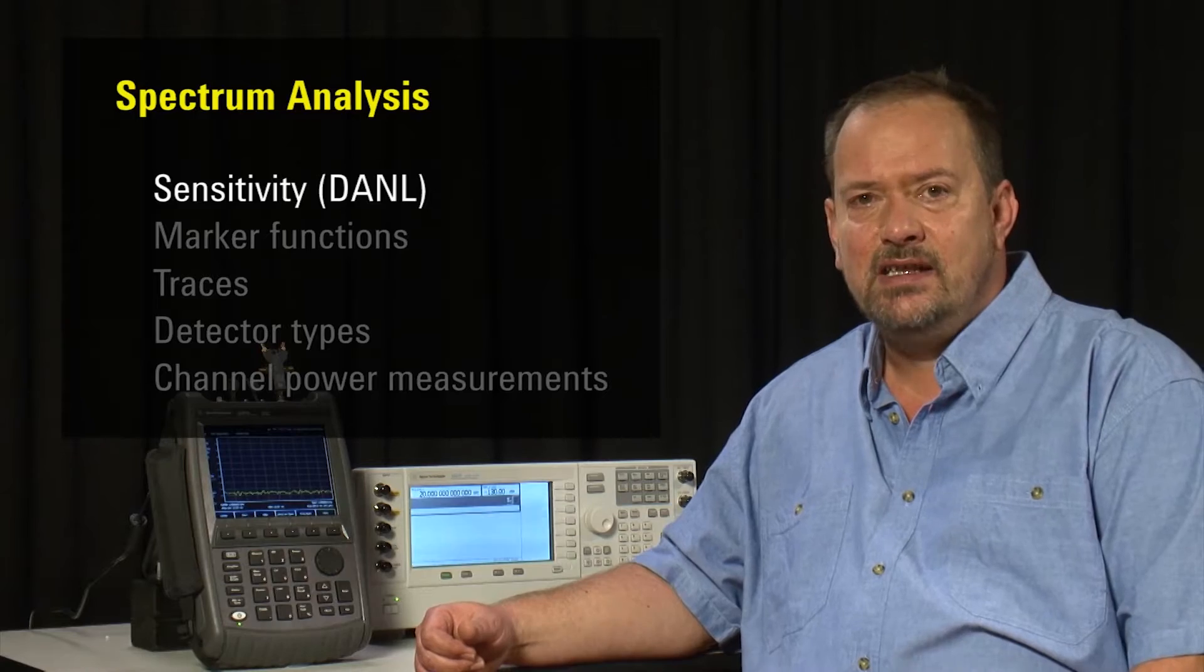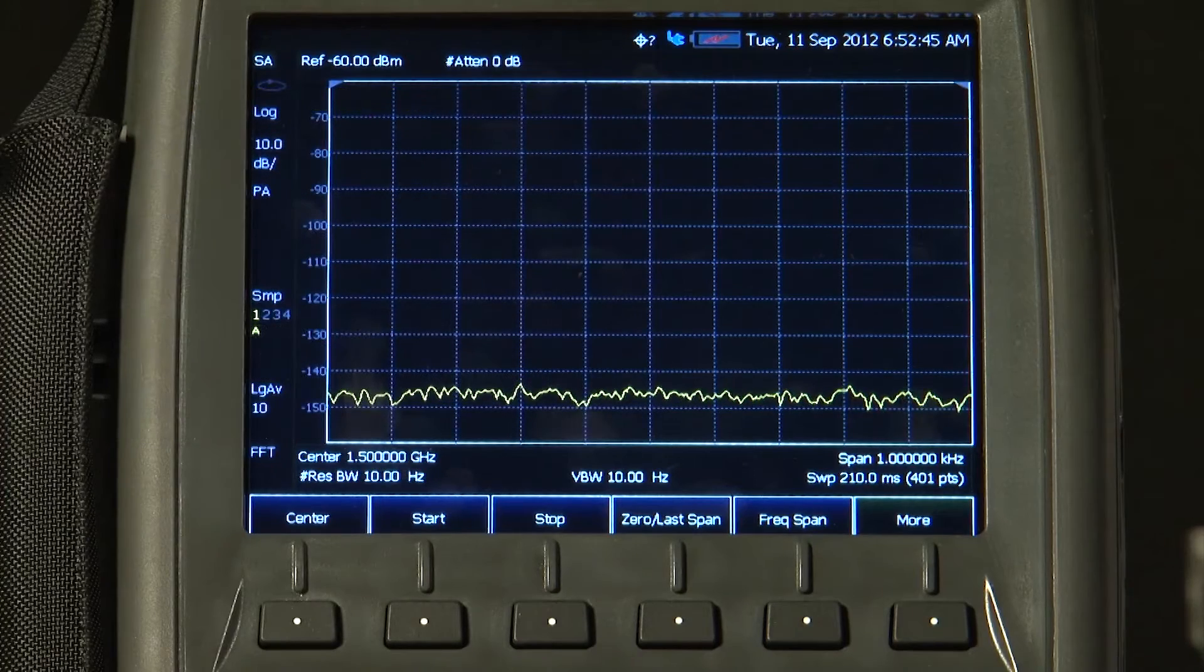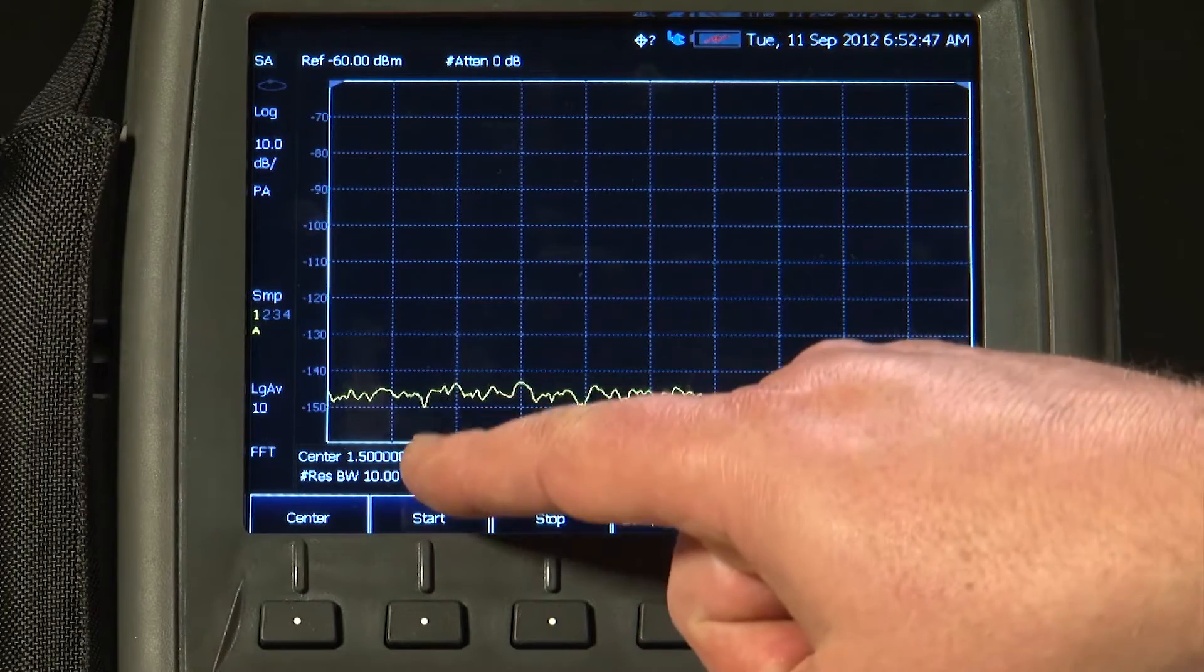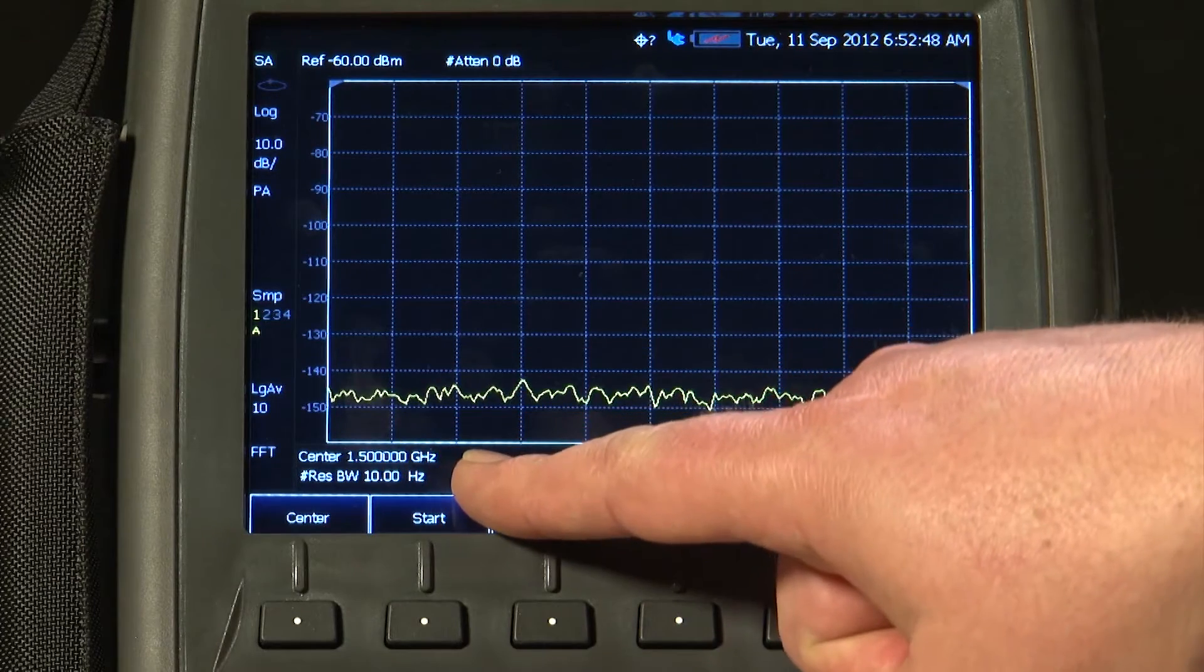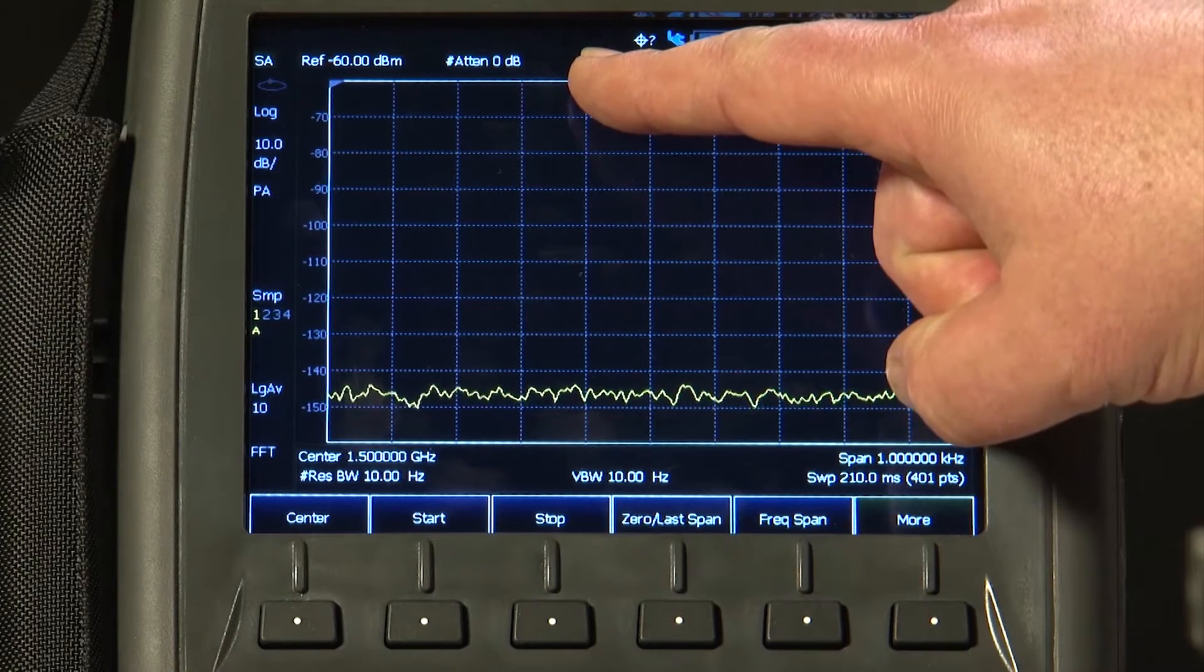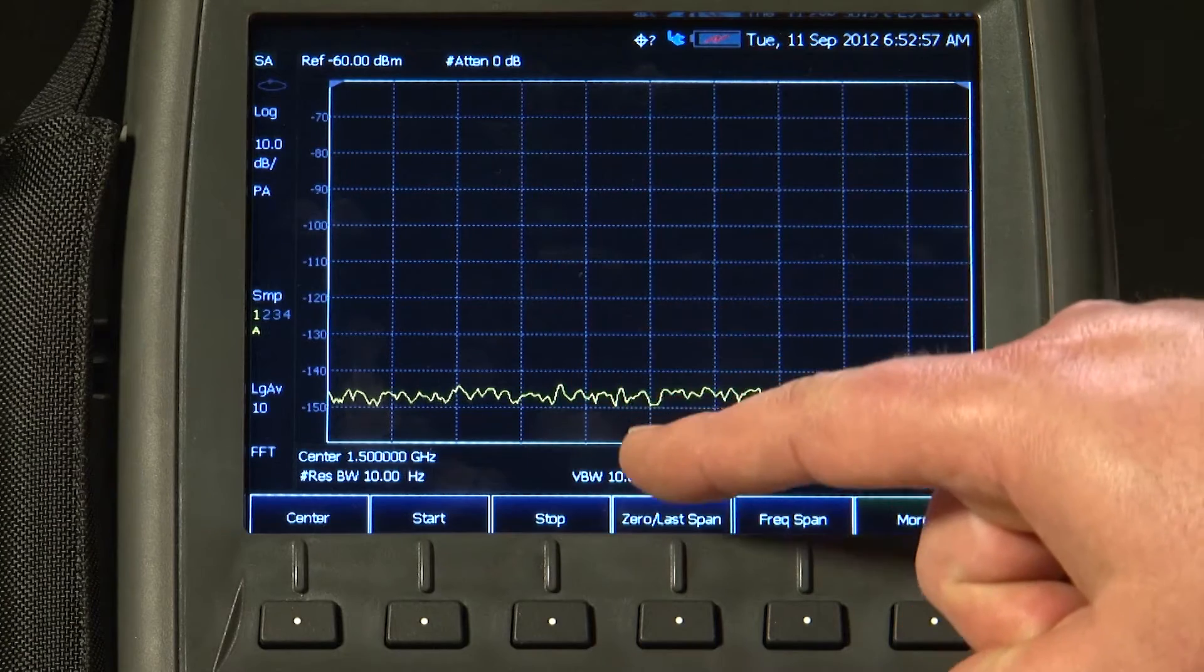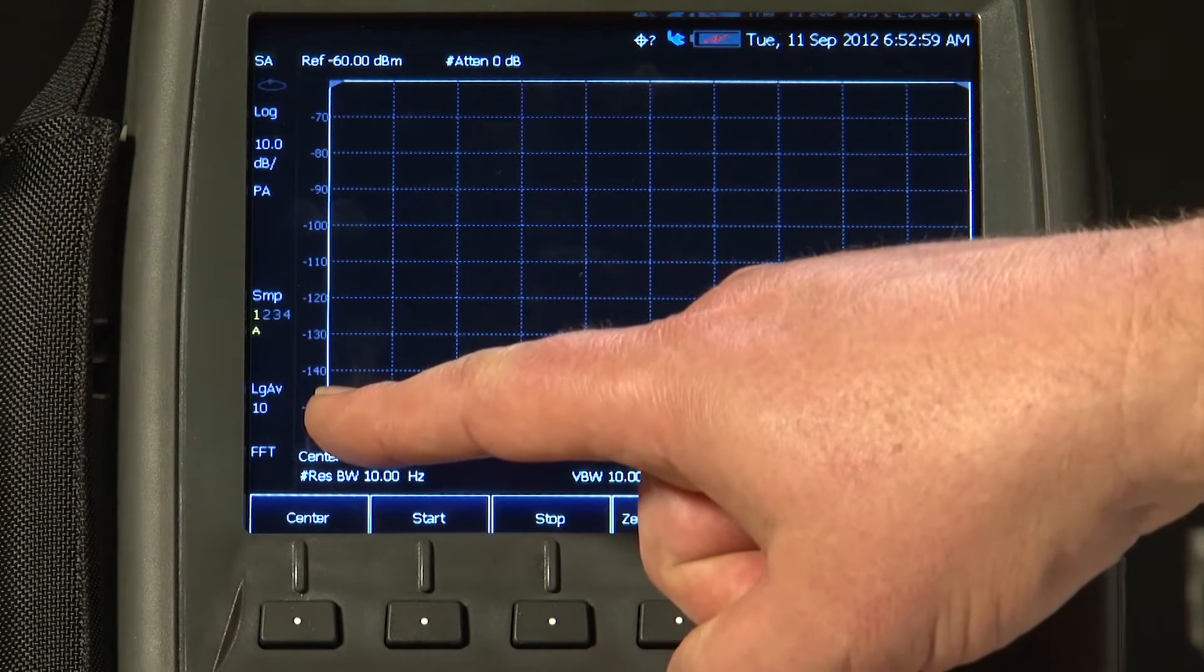Let us start by looking at its sensitivity, or displayed average noise level. Here we are looking at an L-band frequency tuned to 1.5 GHz. The attenuation is set to 0 dB, the pre-amplifier is turned on, and we have averaging turned on with 10 averages.